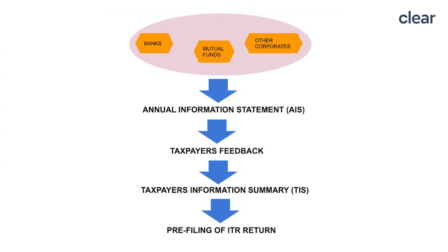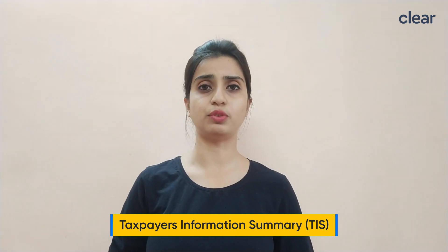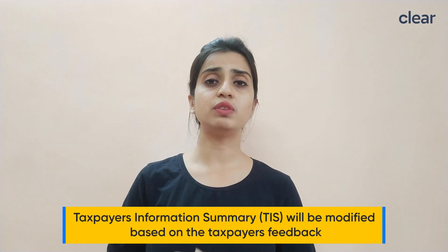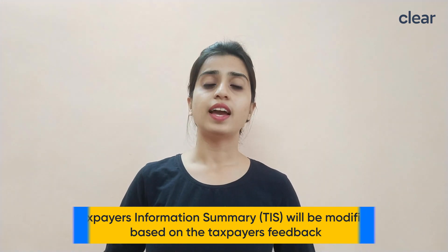Taxpayers can submit feedback on the information, and the value derived after considering the taxpayer's feedback will be automatically updated in the Taxpayer Information Summary on a real-time basis. The Taxpayer Information Summary displays category-wise aggregate information. The summary will be modified based on the taxpayer's feedback, and the modified value is displayed as a derived value. This derived value will be used for pre-filling of the ITR.